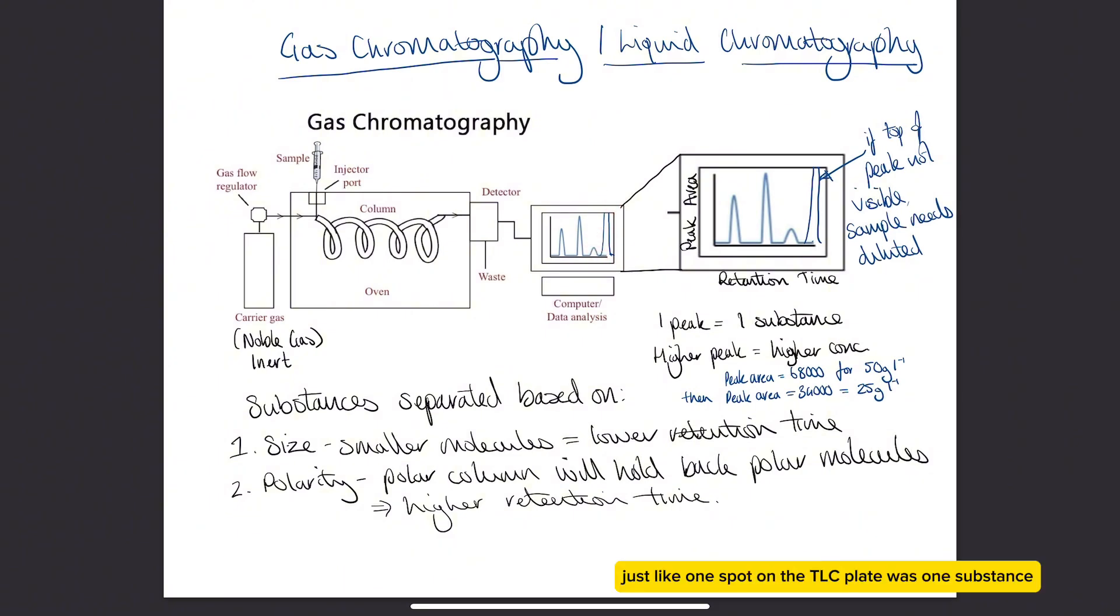Just like one spot on the TLC plate was one substance, one peak on the chromatogram is one substance. From this chromatogram we can see there's four substances in our sample because there's four peaks. Now if one of your peaks has the top chopped off, then that means it's too high a concentration and you need to dilute your sample, because the other thing that's really good about these two types of chromatography is that we can use them to work out the concentration of things in a sample as well.